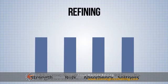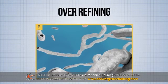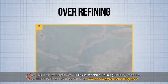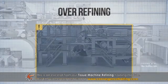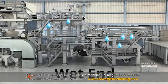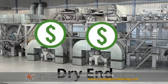Also, in extreme cases, over-refining will damage the fibers and result in fiber cutting, fines generation, and poor strength development. This negatively affects machine runnability, reduces drainage at the wet end, which increases drying demands, and ultimately reduces production rate.